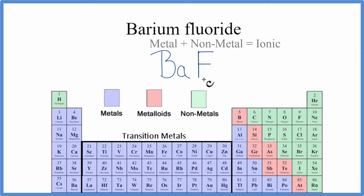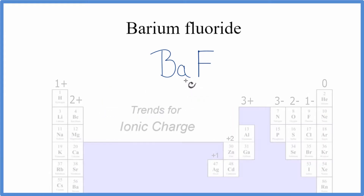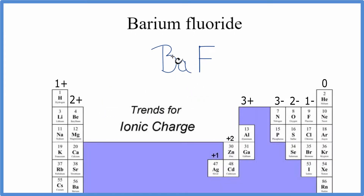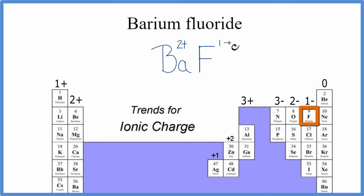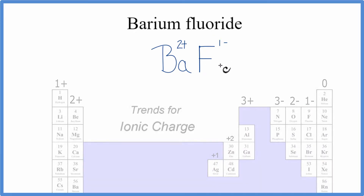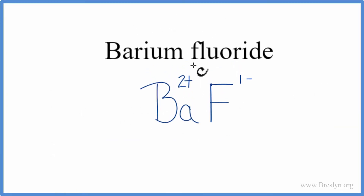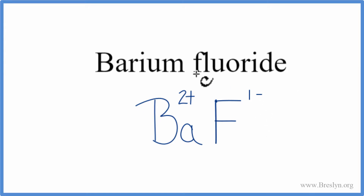When we write formulas for ionic compounds, we have to take into account the ionic charge. Back to the periodic table — barium is in group 2, so it has a 2-plus ionic charge. Fluorine has a 1-minus. These should add up to 0 to have a neutral compound like barium fluoride.